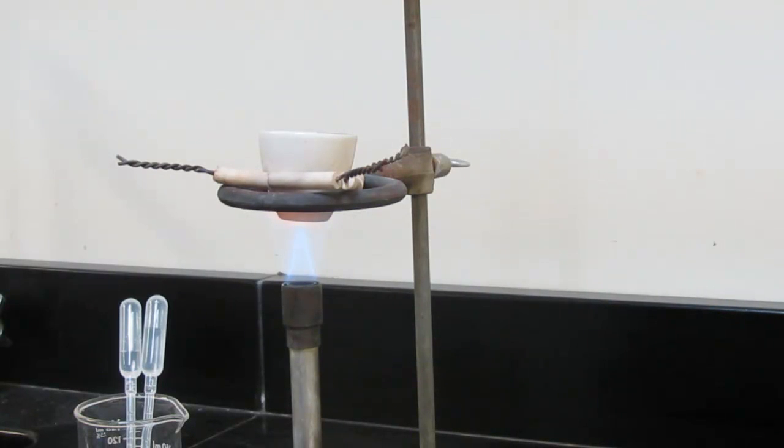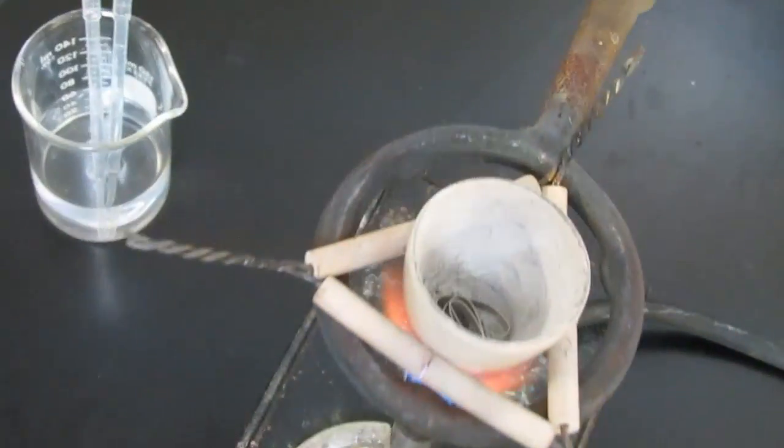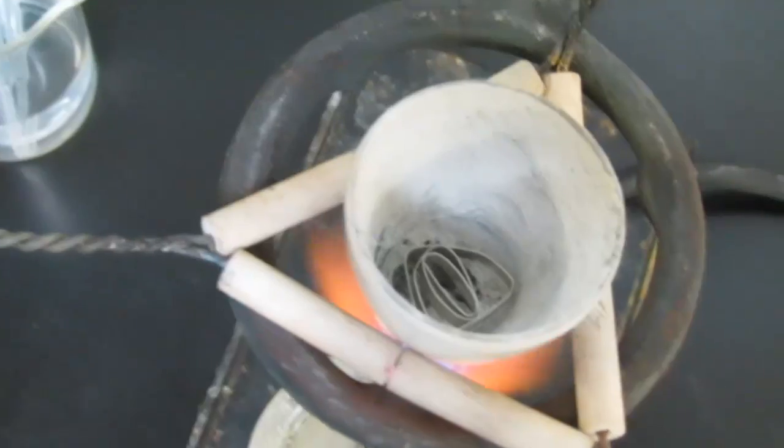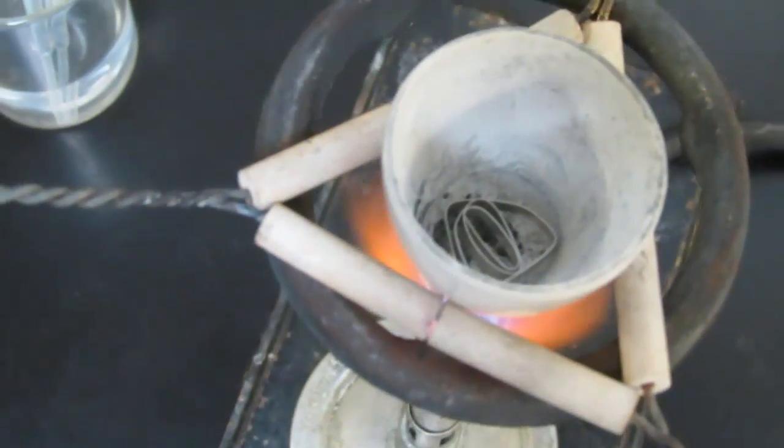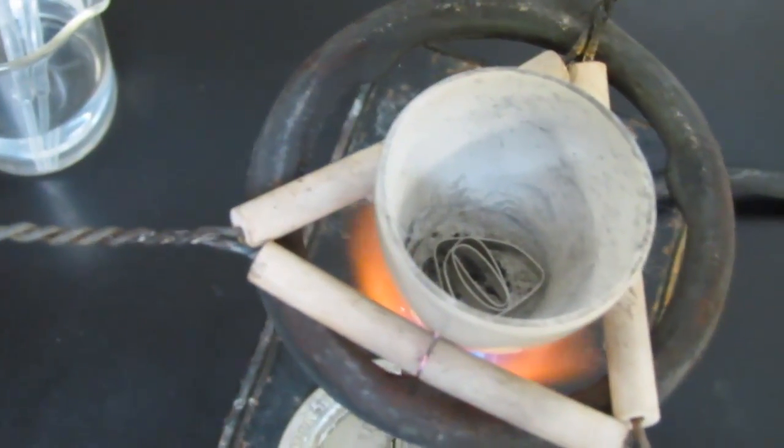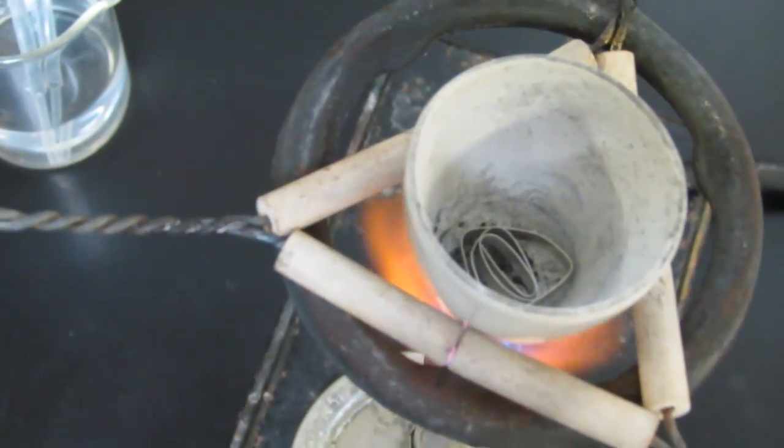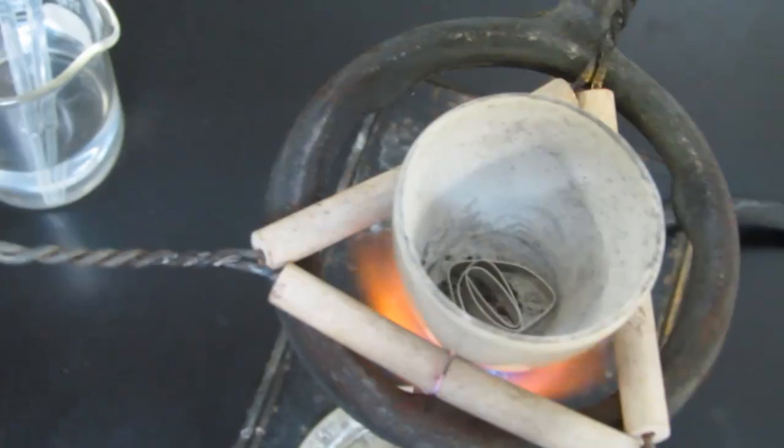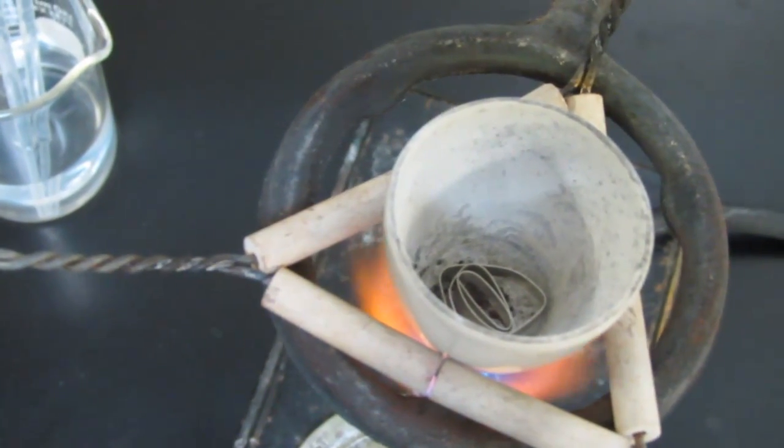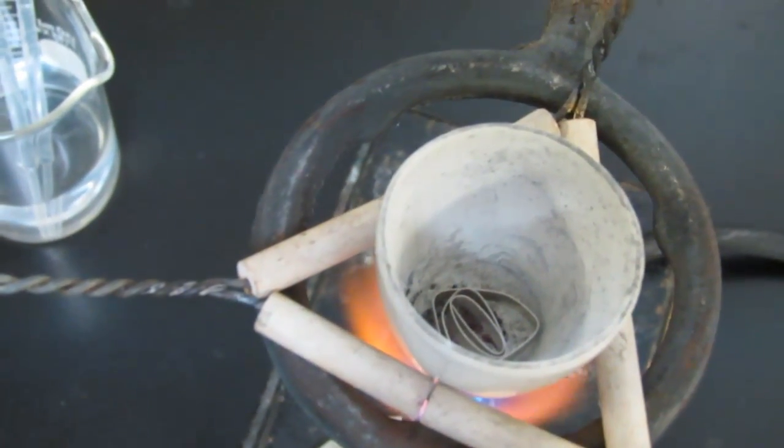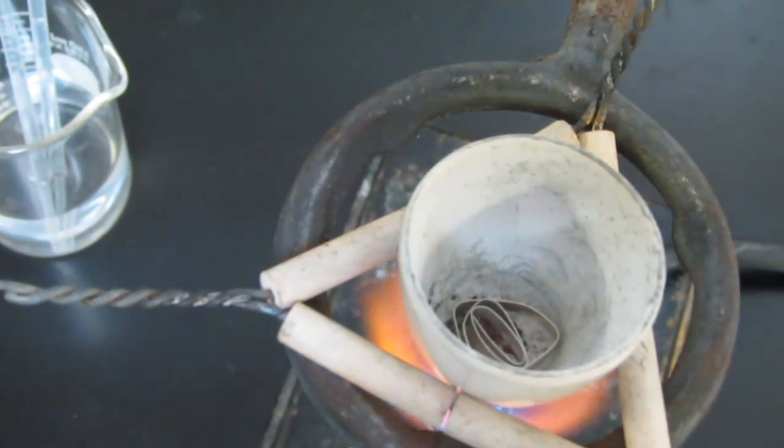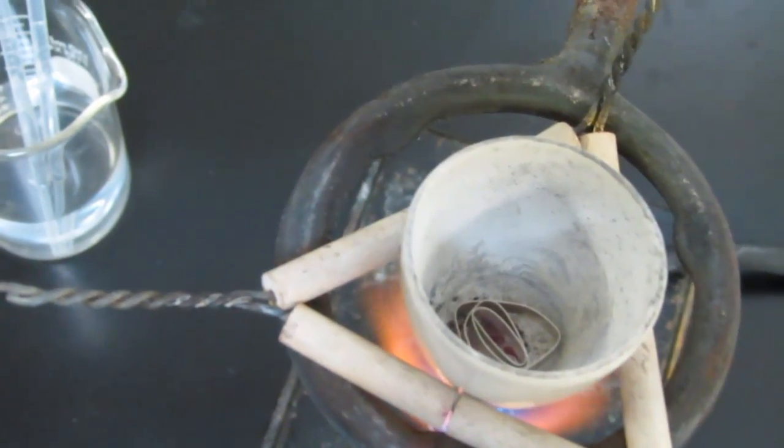And we'll allow that to heat. Let's see if I can manipulate my camera without causing too much of a problem. We'll look down on what we're doing. And you can see the magnesium in there as it's heating. And before long, that magnesium will react with the air around it. But we have to get it nice and hot first. And when it reacts, it begins to glow. And when it begins to glow, we'll go ahead and put the cover on in case any of the product wants to escape. We want to keep it inside that crucible.